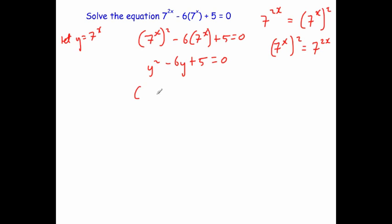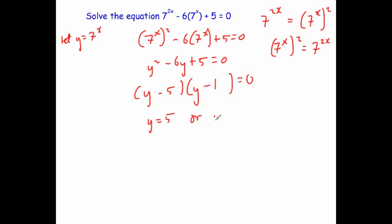I'm now going to factorize this. Factorizing gives us two brackets each with y at the front. The two numbers must multiply to give 5 and add to give minus 6, so we use minus 5 and minus 1. That means y equals 5 or y equals 1.